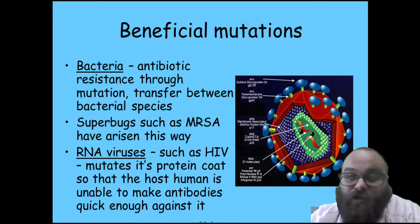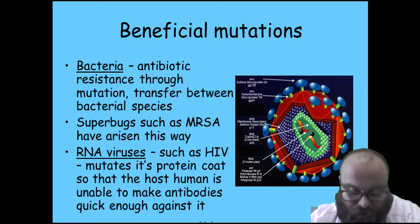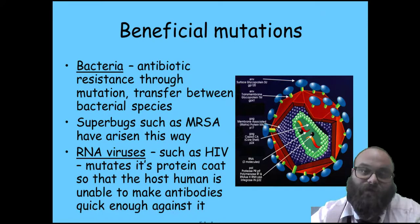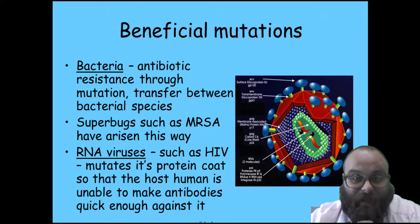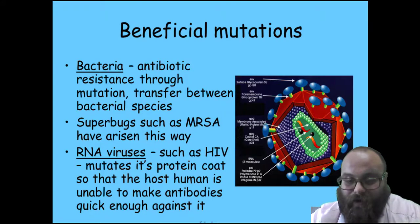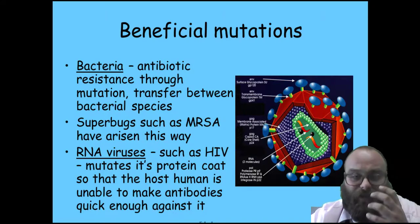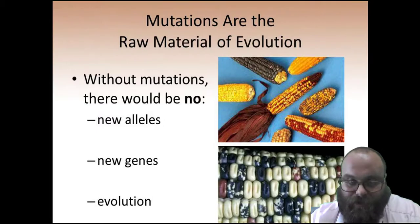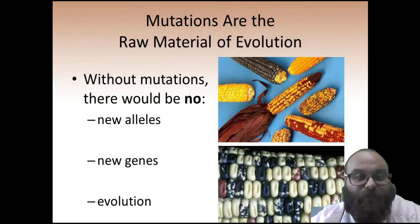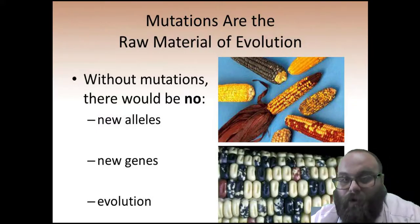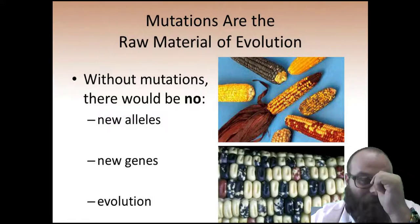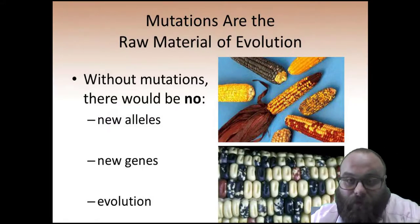Bacteria notoriously mutate very quickly, so they evolve very quickly. Antibiotic resistance in bacteria is something you might encounter in a hospital — bacteria are evolving, and for them that's a benefit, even if it's not great for us. Understanding mutations and evolution is critical moving forward. Mutations are the raw material of evolution: without mutations, there wouldn't be any new alleles, traits, or genes, and evolution would come to a halt. Mutations, in addition to natural selection, are what make populations change over time.